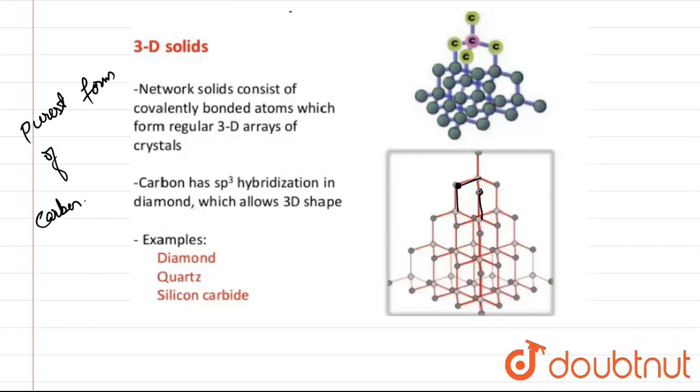So, when you look, it is covalently bonded. We can say that the network consists of covalently bonded atoms which form regular 3D arrays of crystals, or you can say it is having a cage structure. Carbon has sp3 hybridization in diamond, which allows this 3D shape.